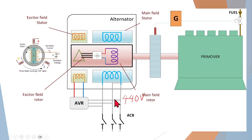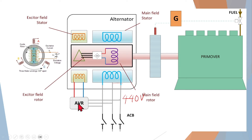There should be some device which monitors this generator output. The device we call the automatic voltage regulator monitors the generator output voltage. If that voltage varies — say it is lowered — the AVR will detect that and make some correction. It produces a DC output voltage received by the exciter of the generator, which creates a magnetic field, and in return increases or decreases the main rotor field strength to regulate the output voltage. This is the basic arrangement.